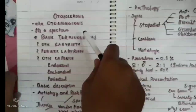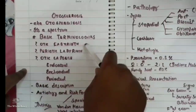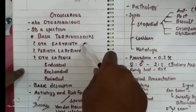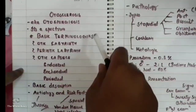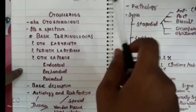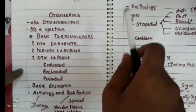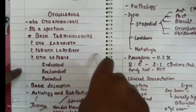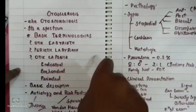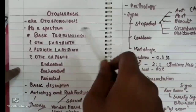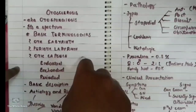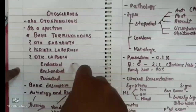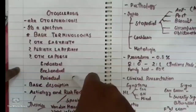To understand otosclerosis, we need to know certain basic terminologies: the otic labyrinth, perilabyrinth, and otic capsule. The otic labyrinth is the membranous labyrinth enclosing the endolymph. The perilabyrinth is the space surrounding the membranous labyrinth, filled with perilymph. The otic capsule is the bony part covered by an endosteum internally and a periosteum externally.